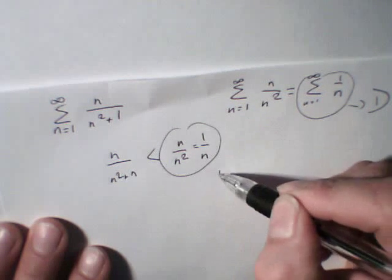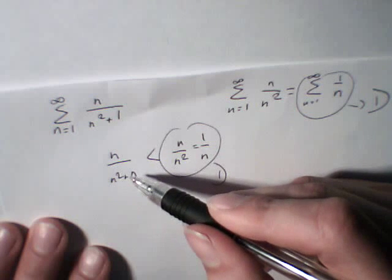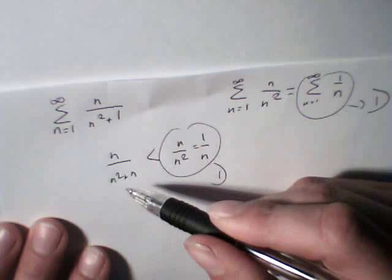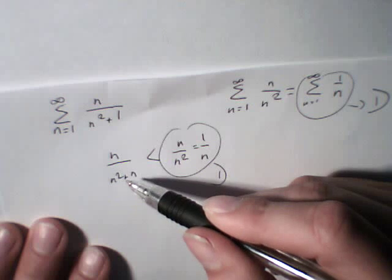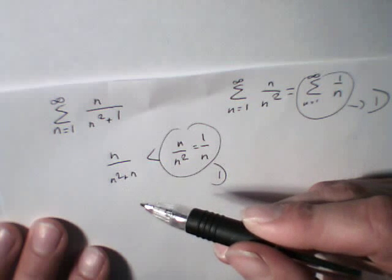n divided by n squared plus n has got to be inferior to n divided by n squared equals 1 divided by n. So we know that this is divergent. This doesn't mean, because it's inferior, it doesn't mean that it is convergent. It could be divergent or convergent. So we don't know.